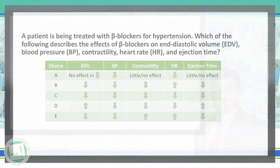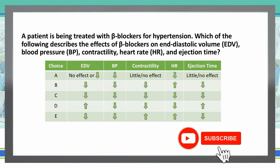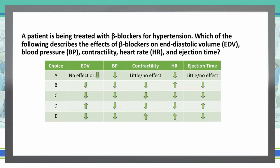This one is a short vignette, so we're going to go ahead and read the whole thing. A patient is being treated with beta blockers for hypertension. Which of the following describes the effects of beta blockers on end diastolic volume, blood pressure, contractility, heart rate, and ejection time?